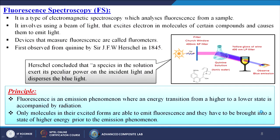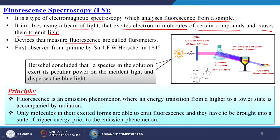The next technique is called fluorescence spectroscopy, in short FS. It is a type of electromagnetic spectroscopy which analyzes fluorescence from a sample. It involves using a beam of light that excites electrons in molecules of certain compounds and causes them to emit light. Devices that measure fluorescence are called fluorometers. First observed from quinine by Sir J. F. W. Herschel in 1845. Herschel concluded that a species in the solution exerts its peculiar power on the incident light and disperses blue light itself.